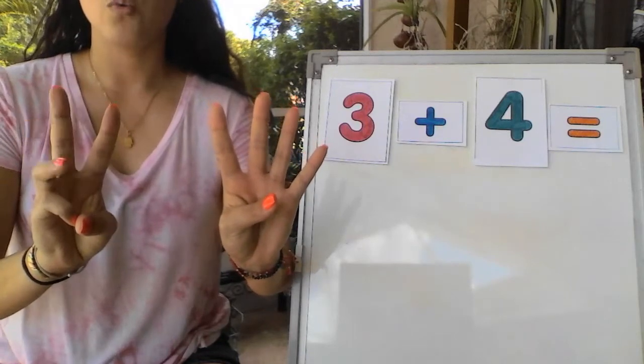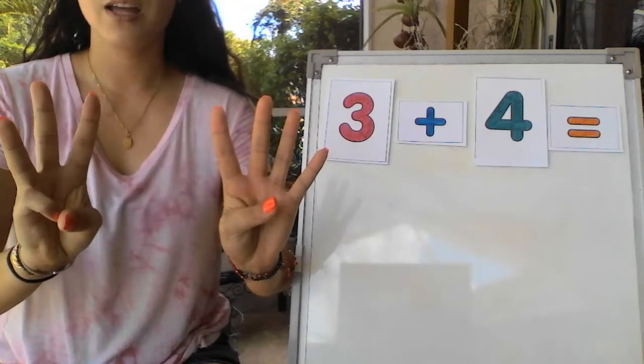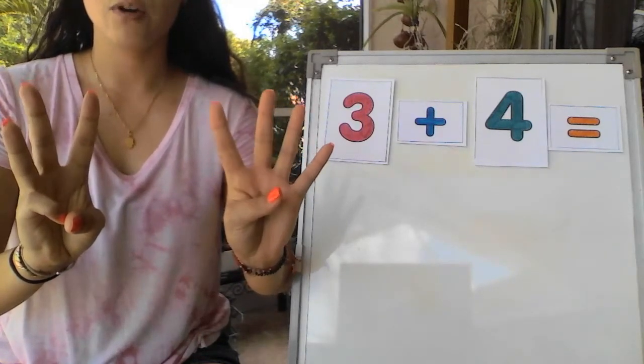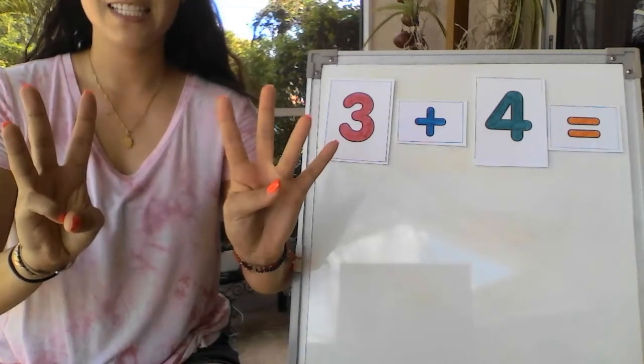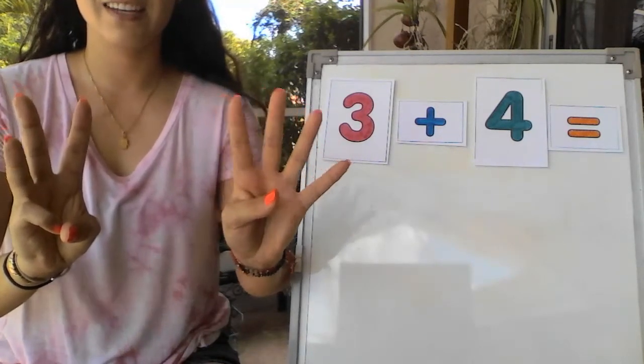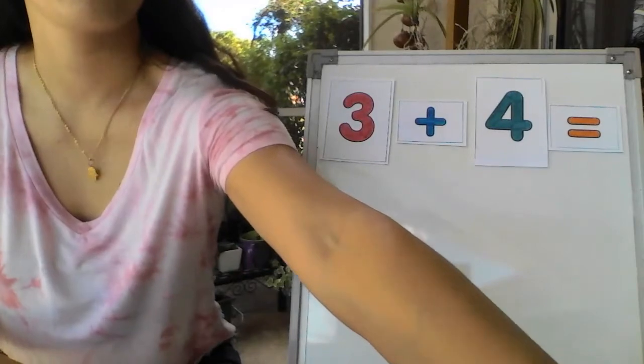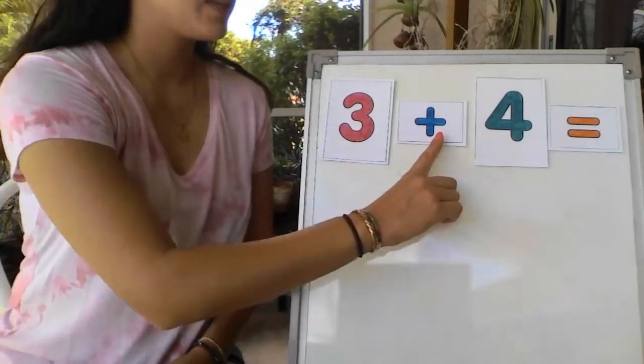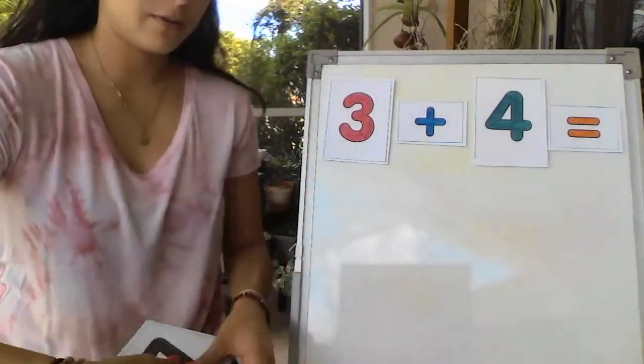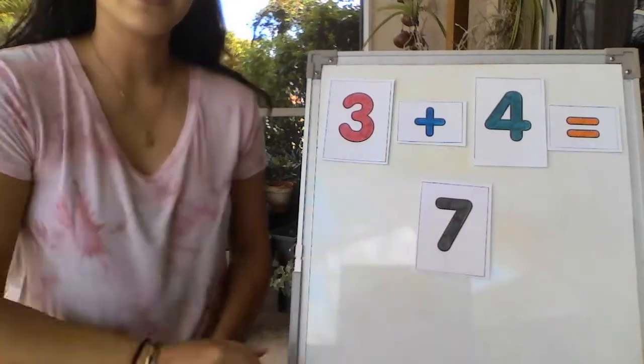Ready? 1, 2, 3, 4, 5, 6, 7. So 3 plus 4 equals 7.